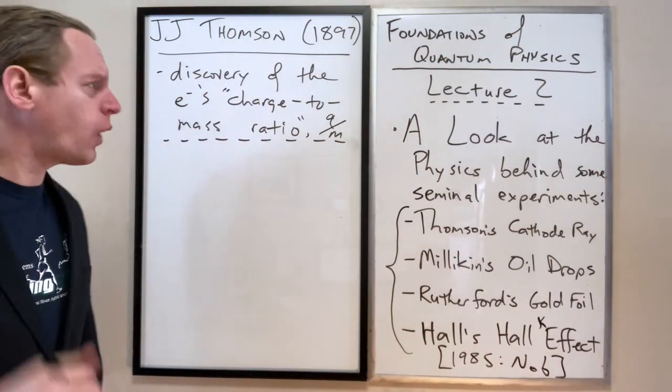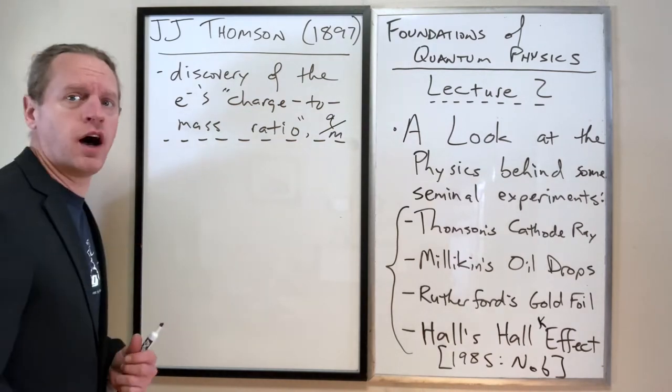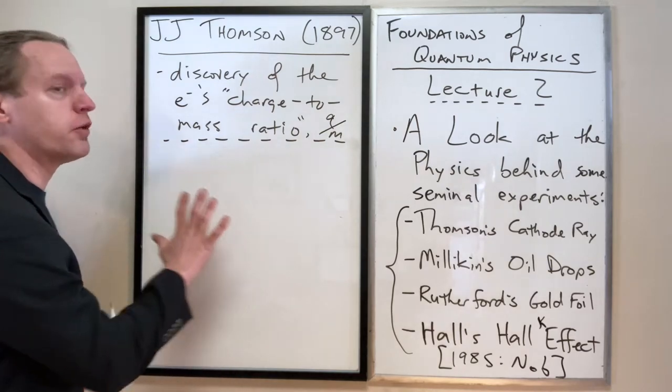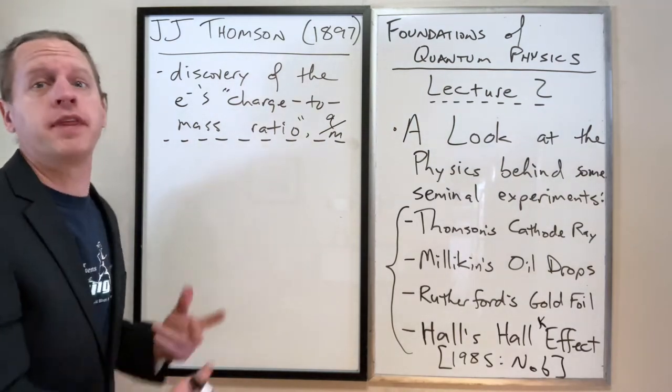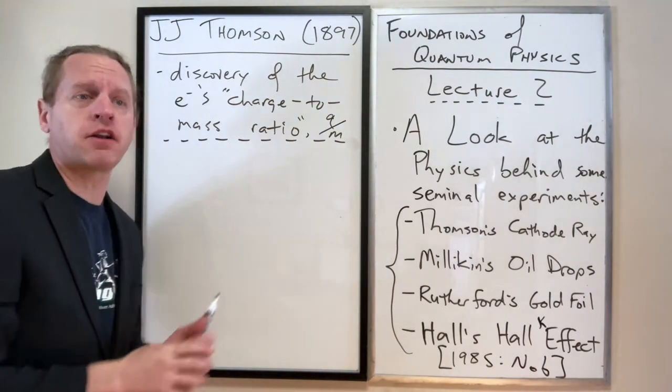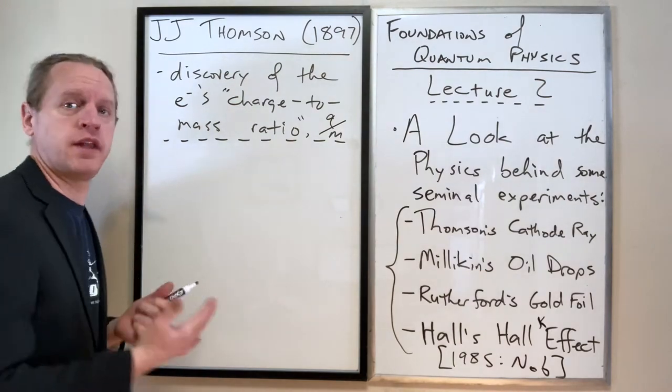His setup was quite simple. He used basically two things: he created an electric field and a magnetic field, and he used those to deflect a ray of electrons and measure the outcome. First of all, he needed a beam of electrons moving at more or less a uniform velocity.